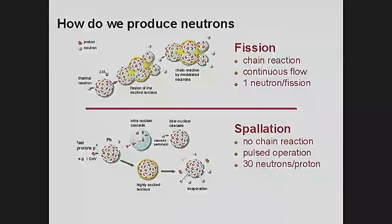In a reactor, you create neutrons by a chain reaction with fissile material. You start with something just on the edge of stability, add a neutron to it, and it breaks up. The basic idea is one neutron in, three neutrons out. You can keep that going — use one of these neutrons to do this again to a different fissile nucleus. After a few generations, you've got a lot of neutrons. That gives you the gas of neutrons.